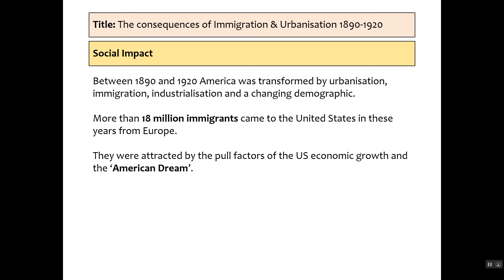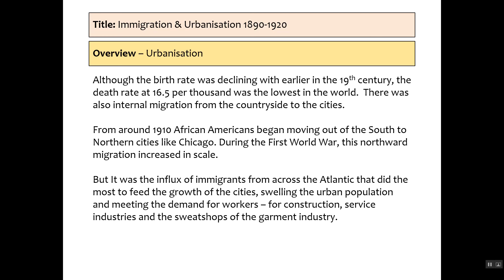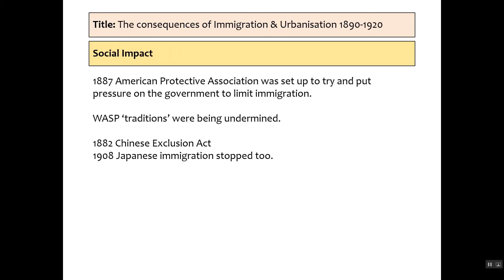Between 1890 and 1920 America is transformed by urbanisation and a huge change in demographics. 18 million immigrants come to the United States from Europe, attracted by the American dream. The birth rate was declining in the 19th century, while the death rate remains at 16.5, the lowest in the world. America is changing massively because of this immigration.